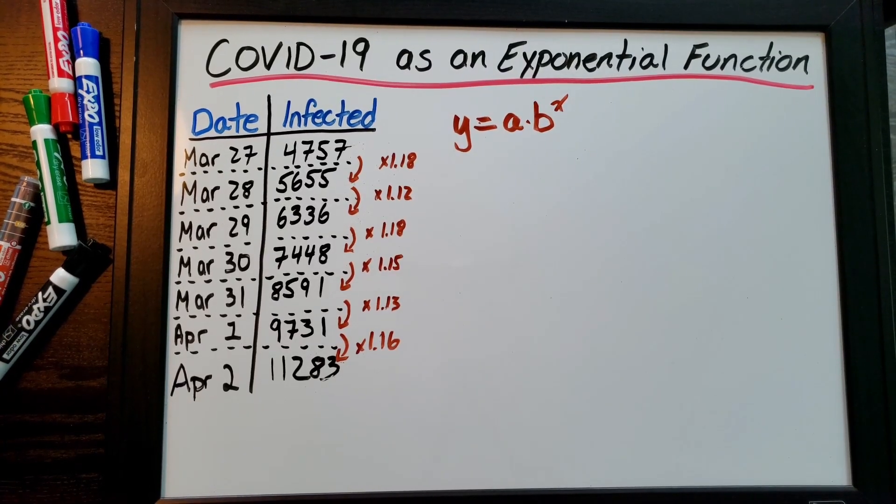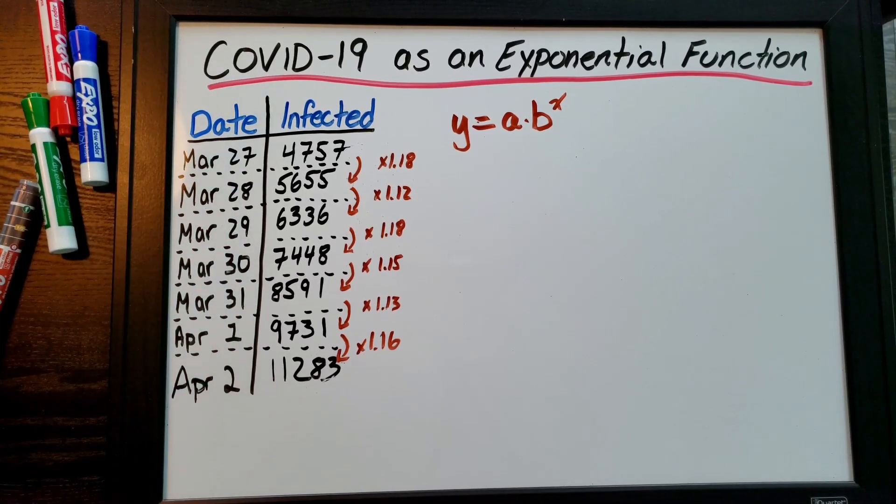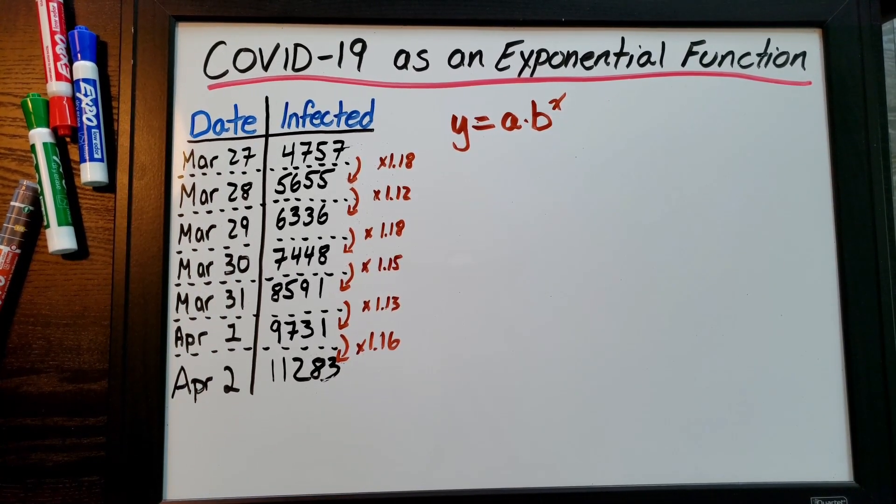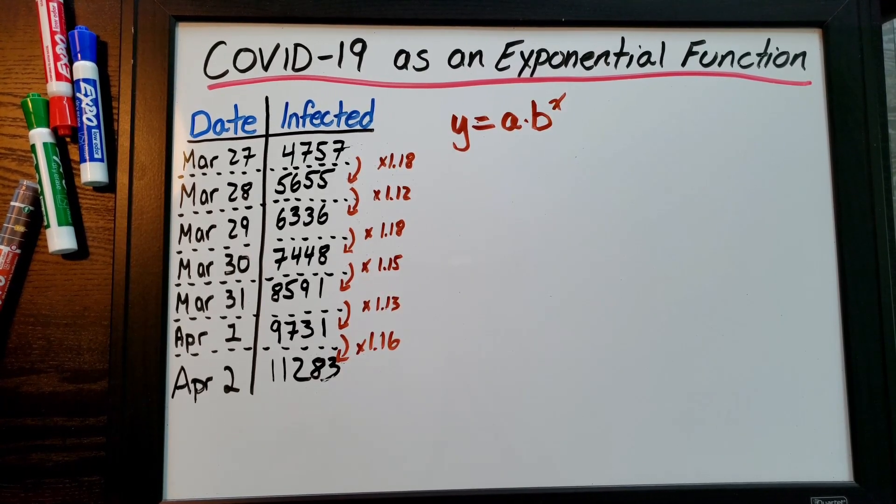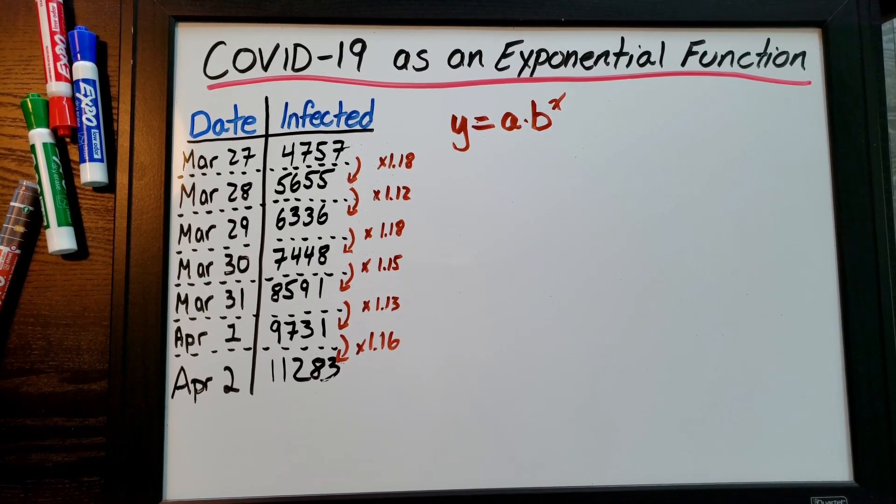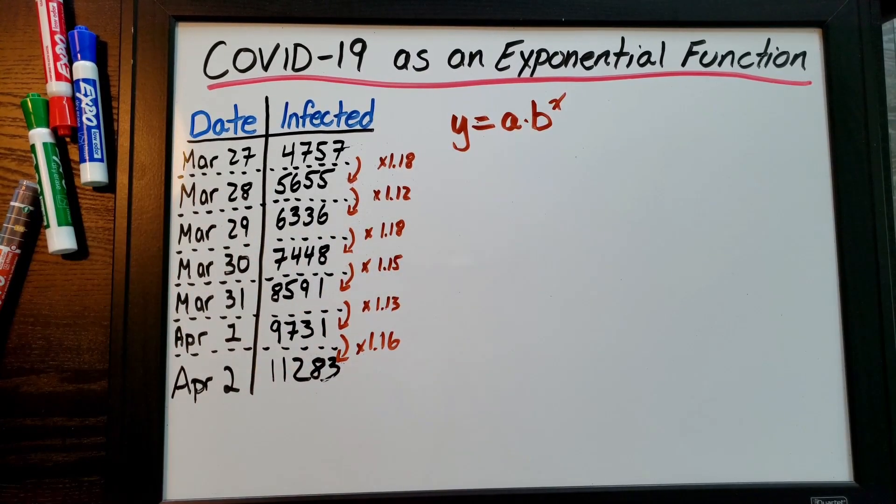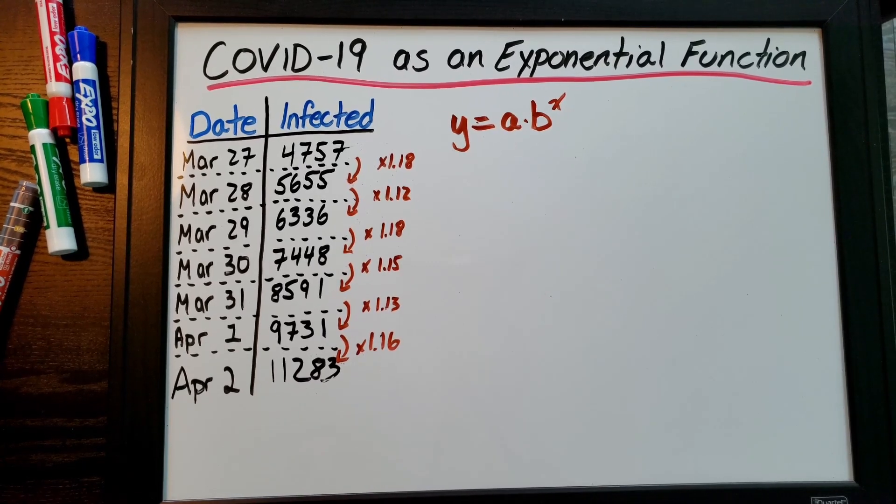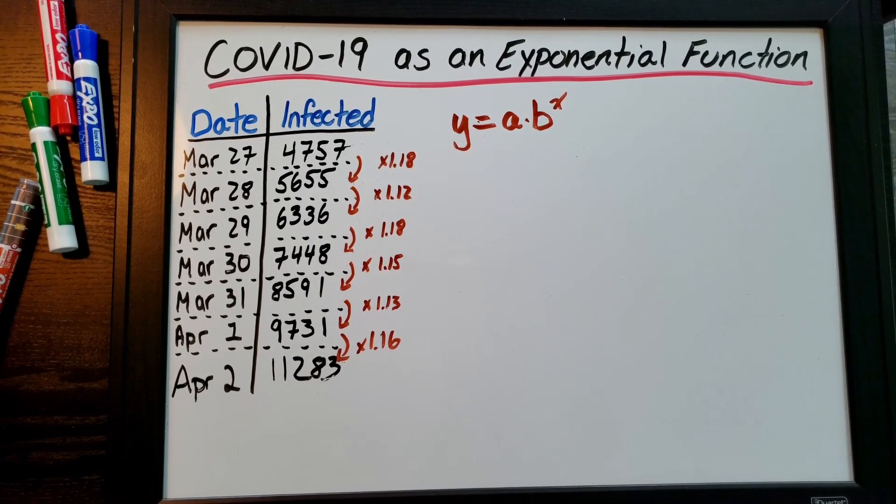All right, so today we're just going to talk about some exponential functions, for instance COVID-19. We're going to talk about how it's an exponential function and what that means about the near future or projected numbers that the government has been coming out with lately. Even though we're missing a lot of information and factors, we're going to do it as simply as possible just to get a feel for exponential growth.